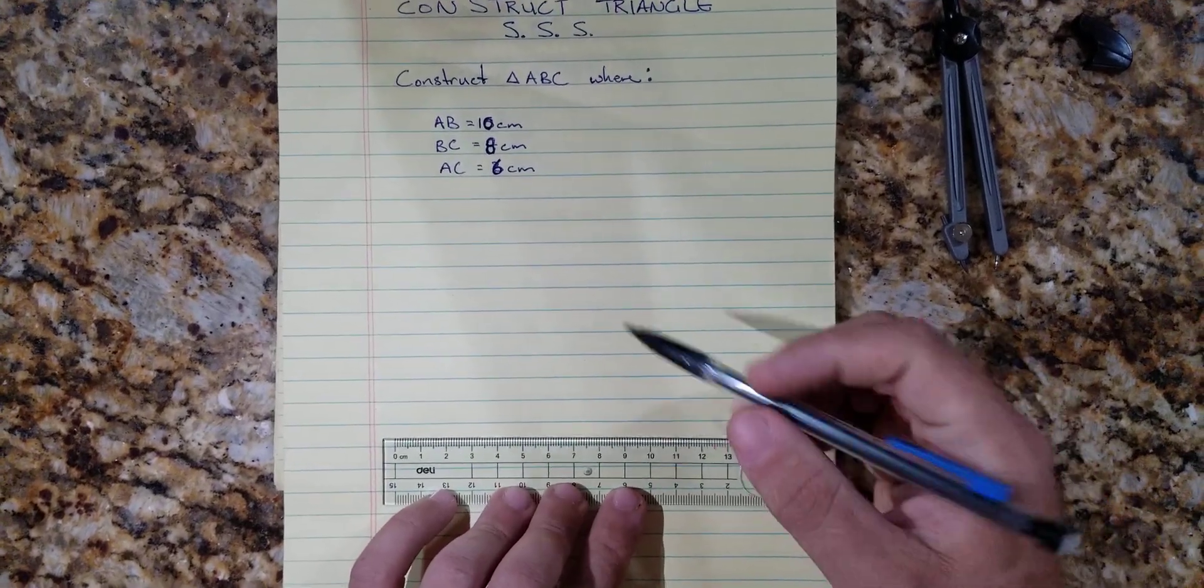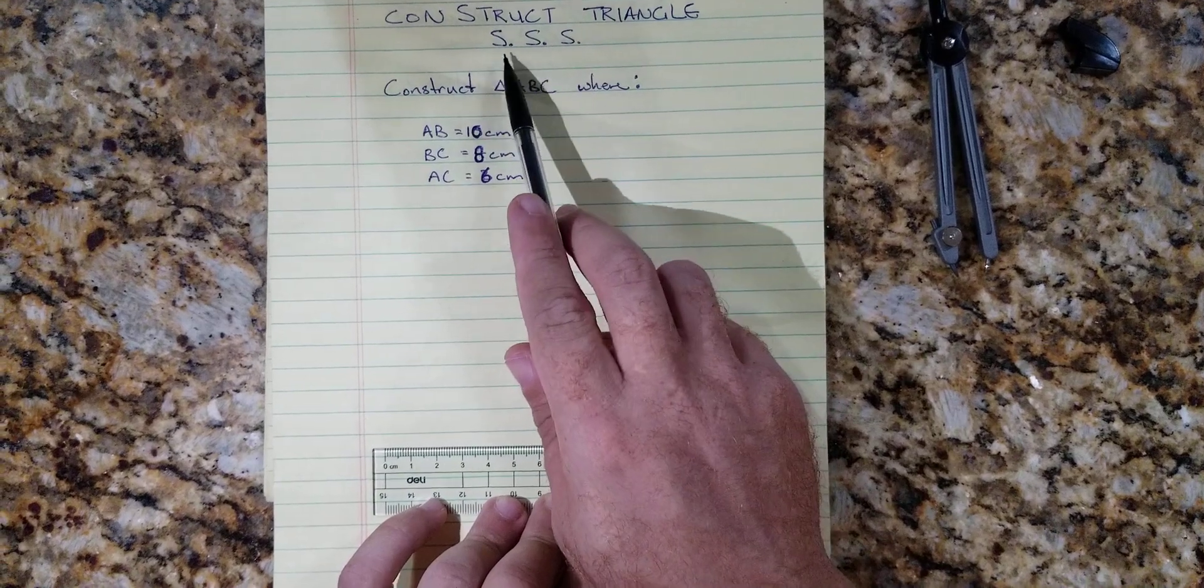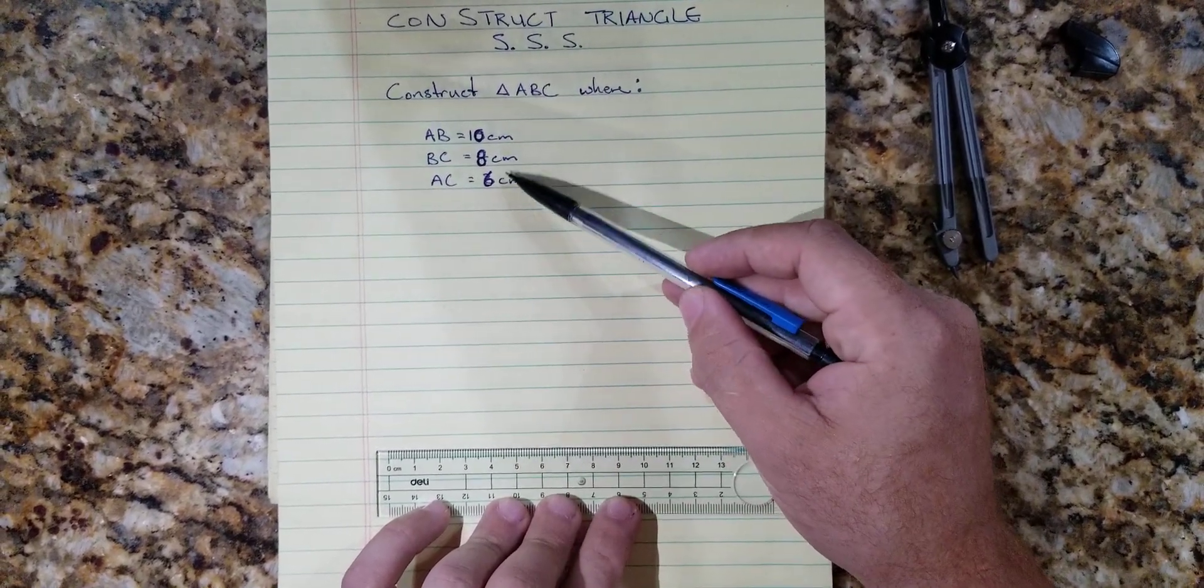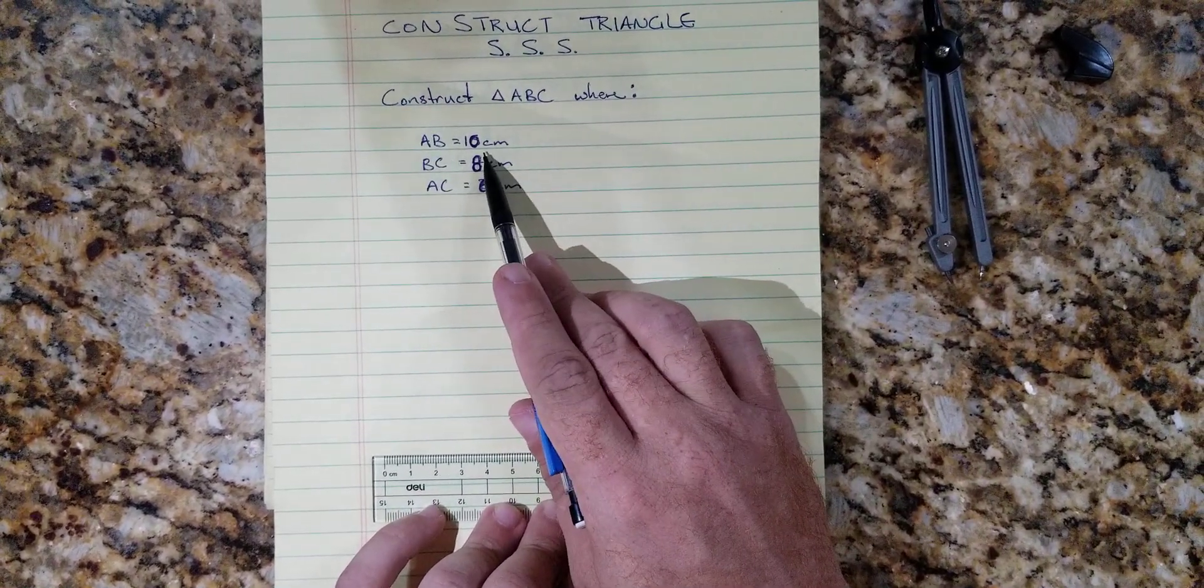All right, so we are going to construct a triangle when given all three sides. We're working with 10, 8, and 6 centimeters. I always start with the longest side, but you don't have to; we can start with any side.